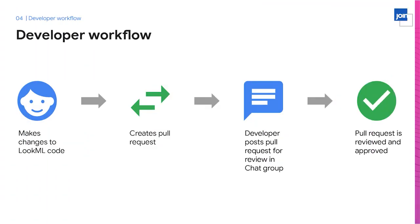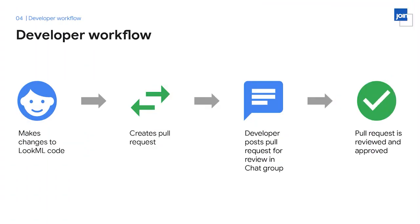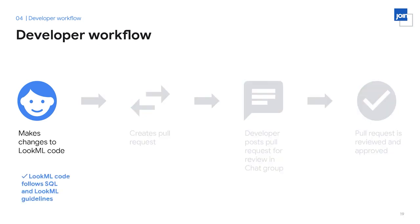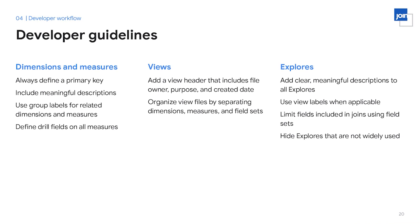Let's review our developer workflow. Once a user is an ambassador, they can begin making changes to the LookML code, ensuring changes follow the LookML, SQL, and pull request guidelines. Our LookML guidelines are broken down into three sections: fields, views, and explores. For dimensions and measures, we always define a primary key — crucial for Looker's symmetric aggregates to execute accurately. All dimensions and measures should have a description defined, even if the field is hidden, as it helps both end users within an explorer and other developers understand what a field represents when reading the LookML code.